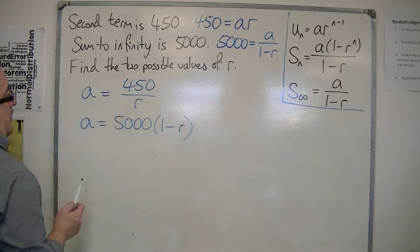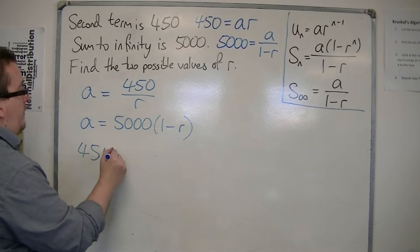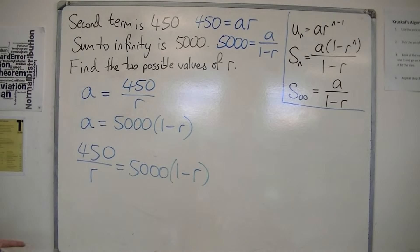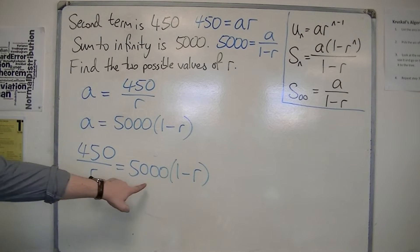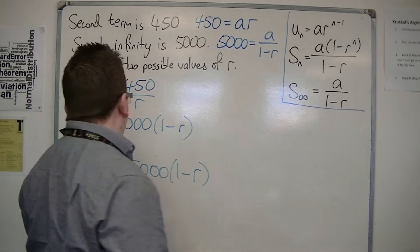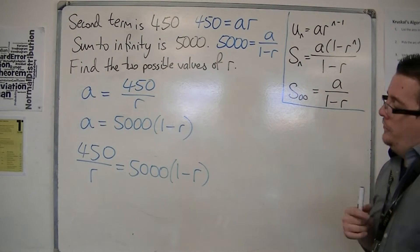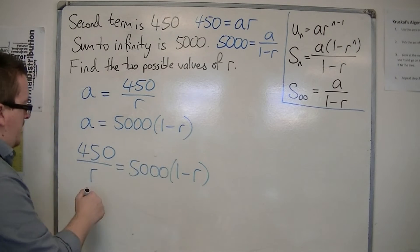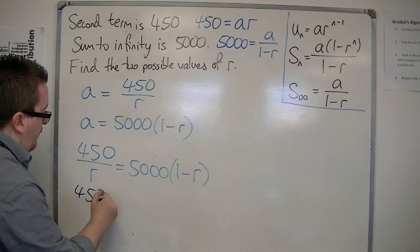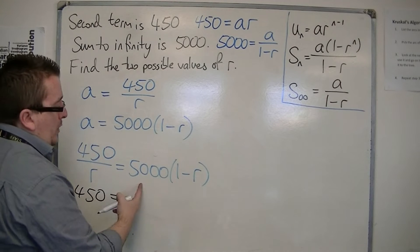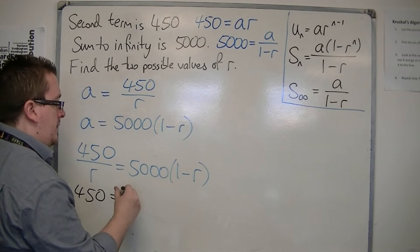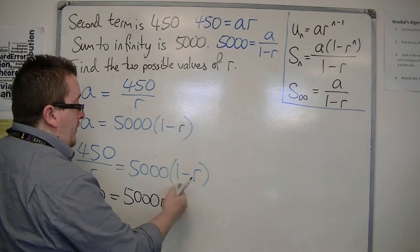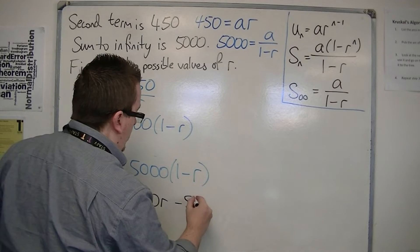So, if a is equal to both of these, then one is equal to the other. So, put one equal to the other. And now, I want to rearrange this. If I expand the right-hand side and multiply through by this r at the same time, I'm going to be left with 450 on the left-hand side. It's equal to 5000r. And 5000 times minus r times that r is minus 5000 r squared.